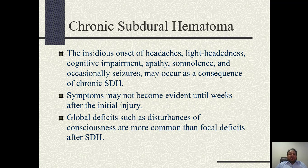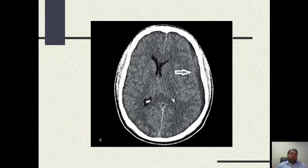Another treatable cause of dementia is chronic subdural hematoma. These patients present with insidious onset of headache, light-headedness, cognitive impairment, apathy, and somnolence. Occasionally the patient may have seizures. There may or may not be a history of a fall, because in old age patients with dementia may not recall having fallen. Even without a history of fall, we proceed with neuroimaging to rule out chronic subdural hematoma.